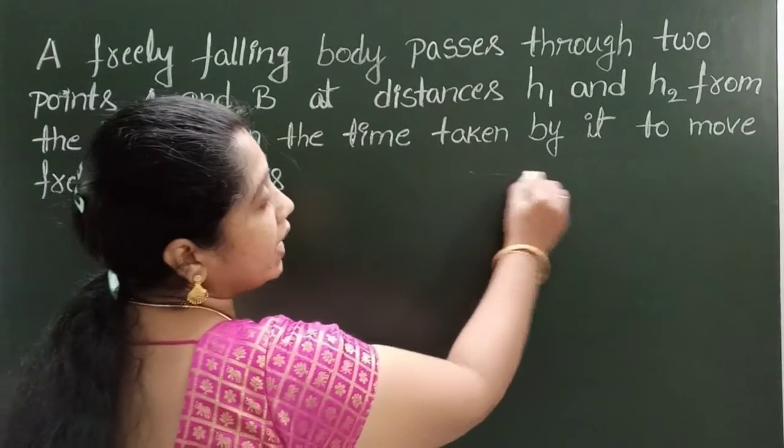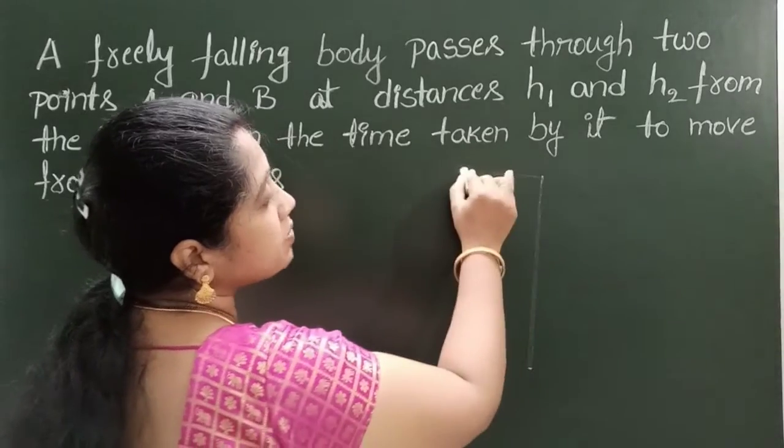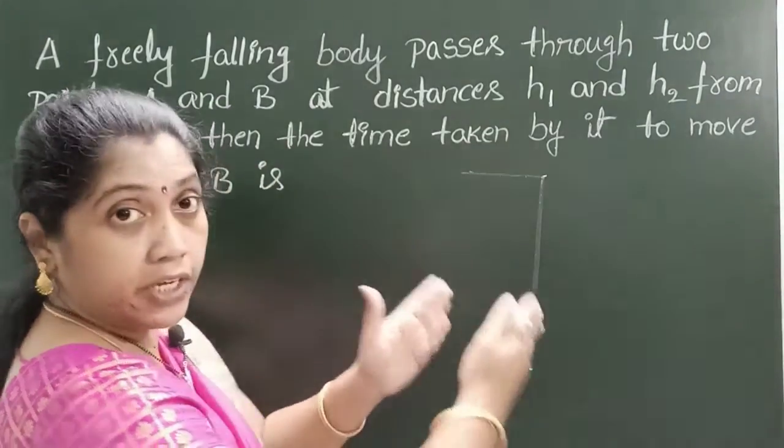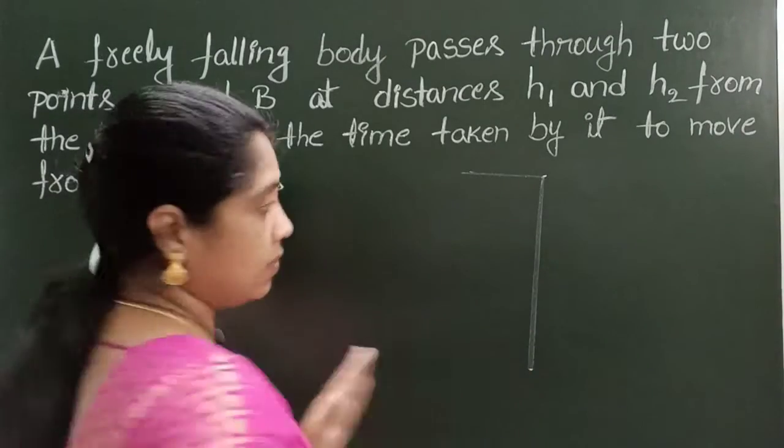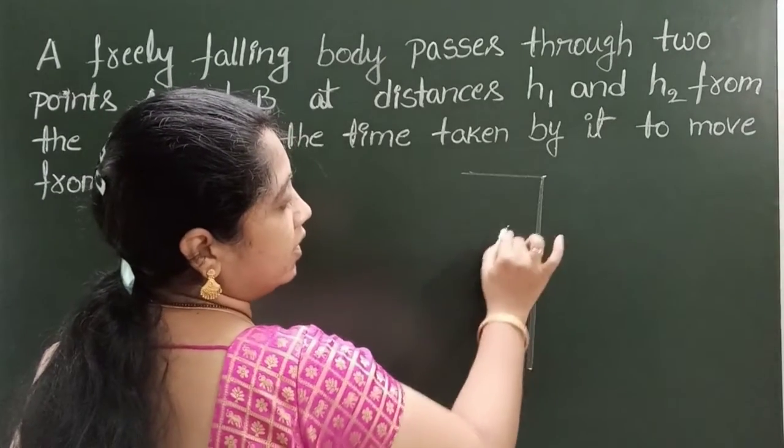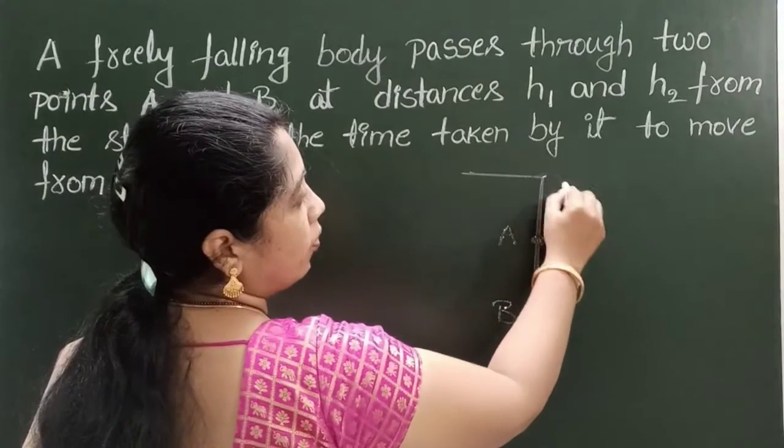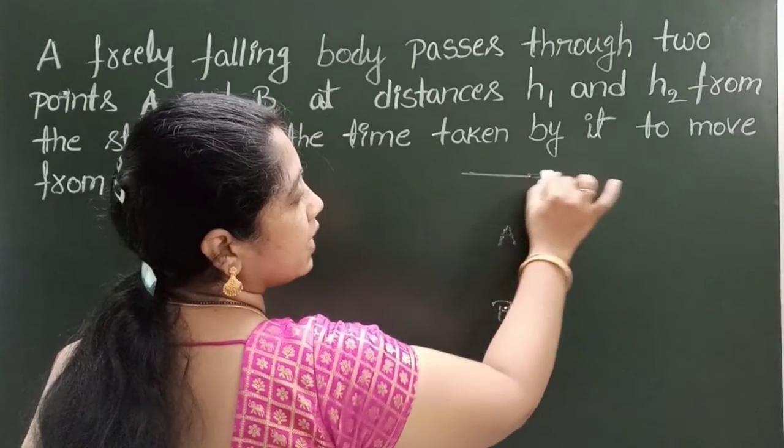So here when a body is freely falling from certain height, on its way it crosses two points. First point A and second point is B. So body is falling from certain height.